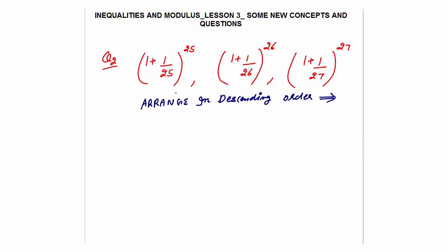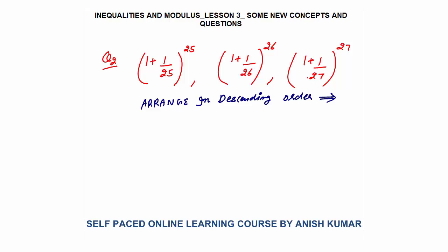Question 2: Arrange (1+1/25)^25, (1+1/26)^26, and (1+1/27)^27 in descending order. Using the concept we discussed — where x ≥ 1 gives values between 2 and 2.8 — let's first establish a pattern by computing a few values.